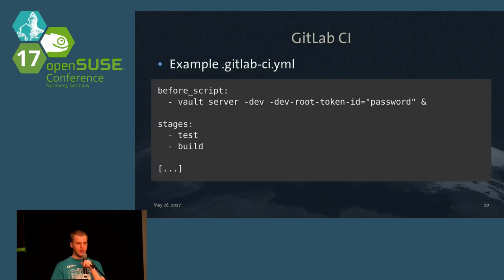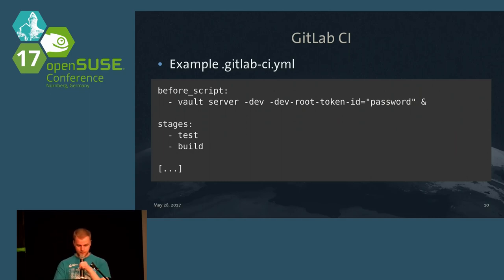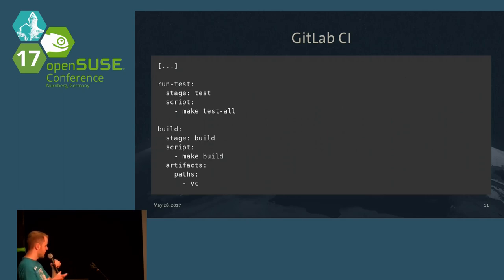Here is a short example — a snippet from our Vault client, a Go-based CLI tool to access the HashiCorp Vault server. Before starting the test run we mock or start the Vault server so we can run the tests against it. We define two stages: the first takes care of the tests themselves, and afterwards we build the Go binary. The artifacts are then stored in the WC directory after the build, and that is the directory that will be uploaded back to GitLab as artifacts.